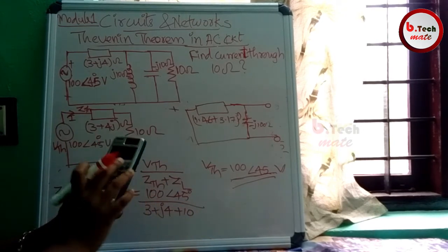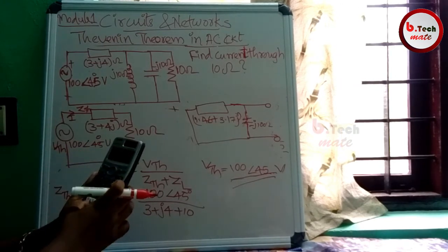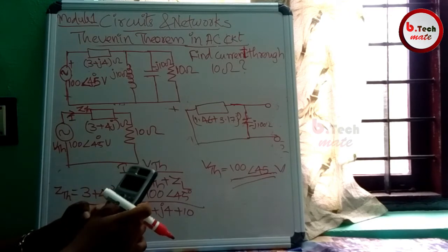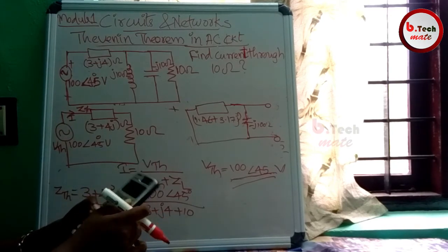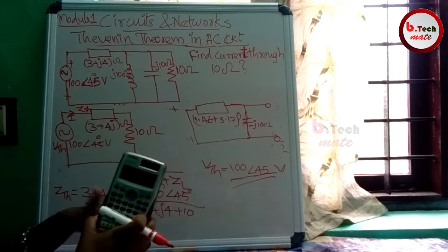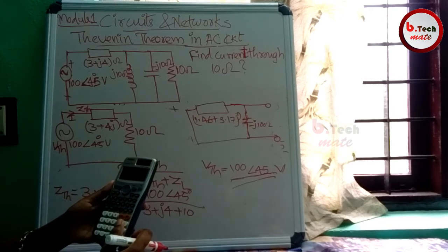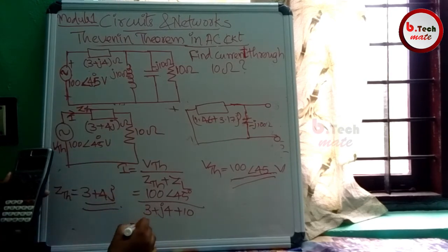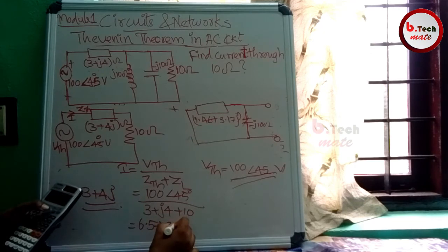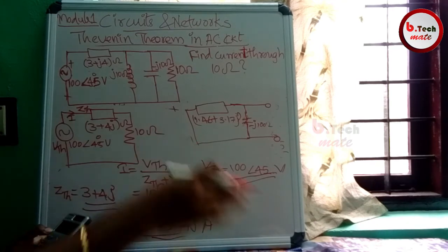Setting the calculator to degree mode. Find 100 angle 45 divided by (13 plus 4J). The answer is 6.49, approximately 6.5 plus 3.44J amperes.